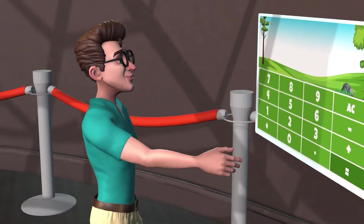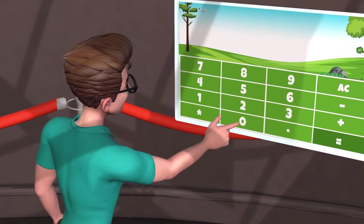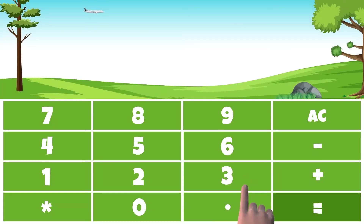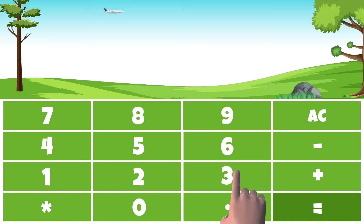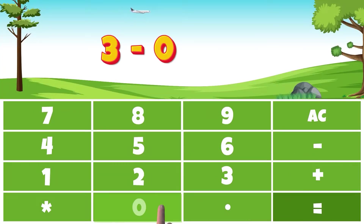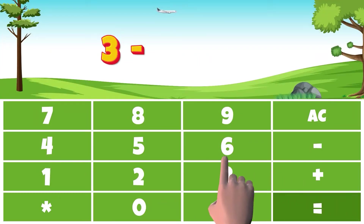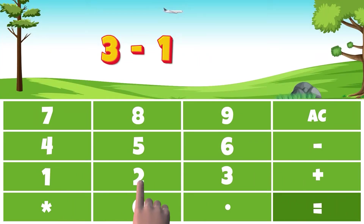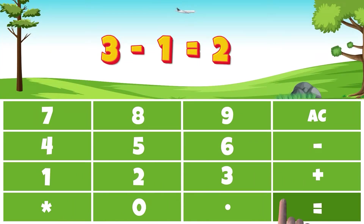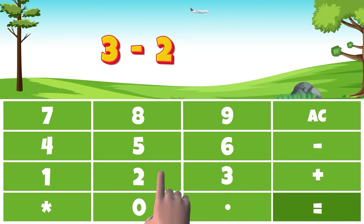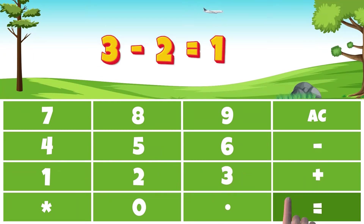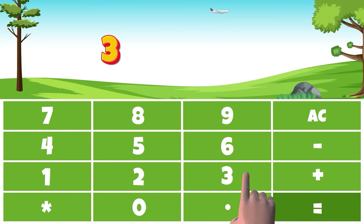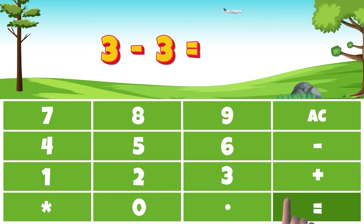Start by subtracting zero from three. Then we subtract one, two, and three from three. So, three minus zero equals three. Three minus one equals two. Three minus two equals one. Three minus three equals zero.